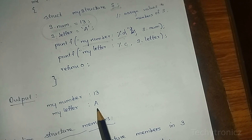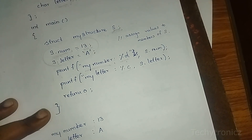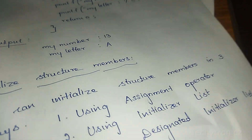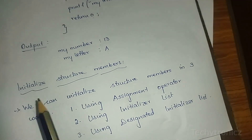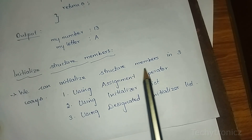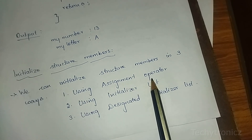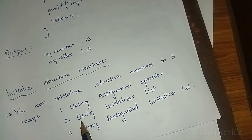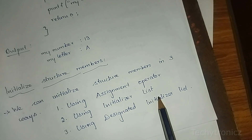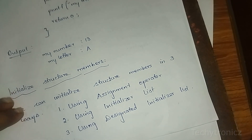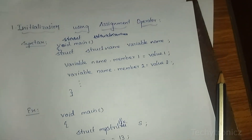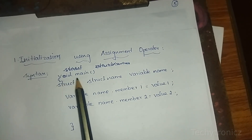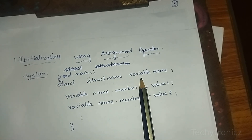Next: initializing structure members. There are three ways to initialize structure members: one, using the assignment operator; two, using an initializer list; three, using a designated initializer list.